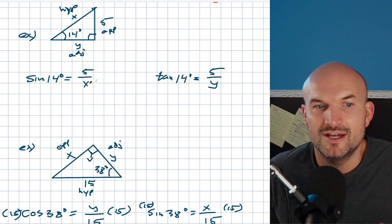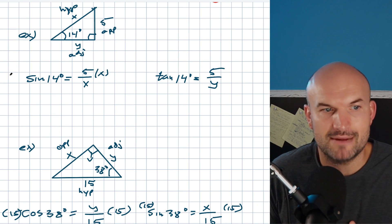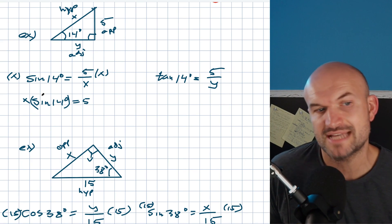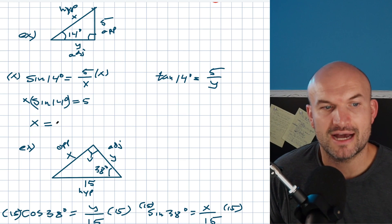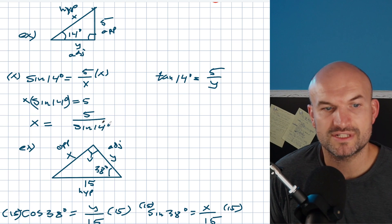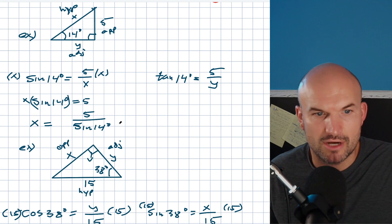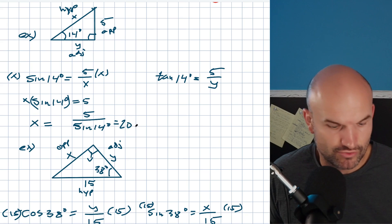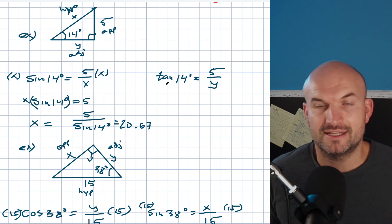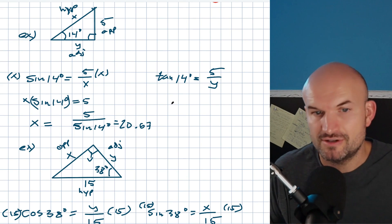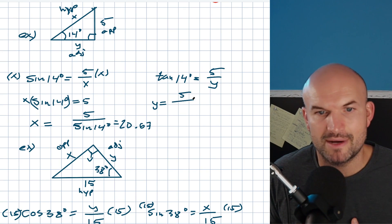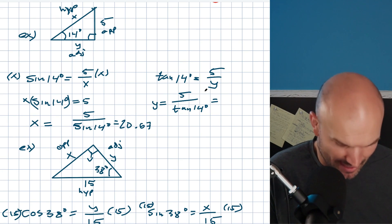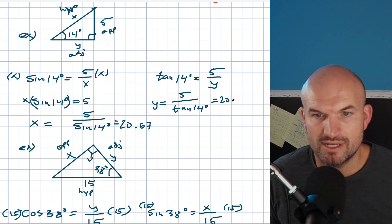Now going back to the original problem where the variable is in the denominator: for sine of 14 degrees equals 5 over X, multiply both sides by X to get X times sine of 14 degrees equals 5, then divide by sine of 14 degrees. So X equals 5 divided by sine of 14 degrees, which gives approximately 20.67. Similarly, for tangent of 14 degrees equals 5 over Y, multiply by Y on both sides then divide by tangent of 14 degrees. So Y equals 5 divided by tangent of 14 degrees, which gives approximately 20.05.